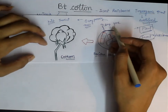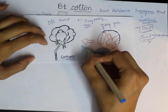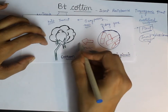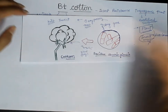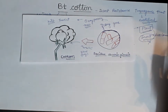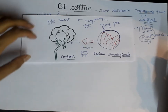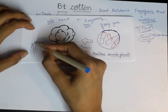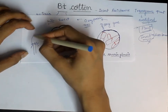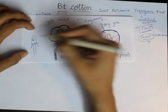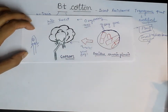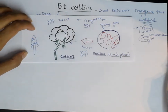What we do is introduce this cry gene into the cotton plant. Why do we do this? To make the cotton plant resistant to insects. Insects damage the cotton plant, preventing it from growing properly. So what we want is for the cotton plant to grow such that insects cannot damage it.